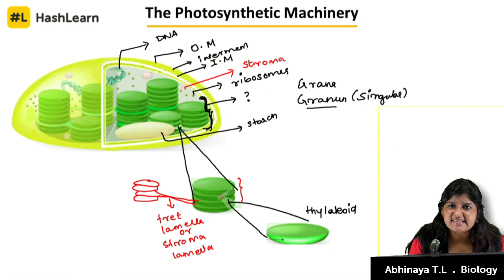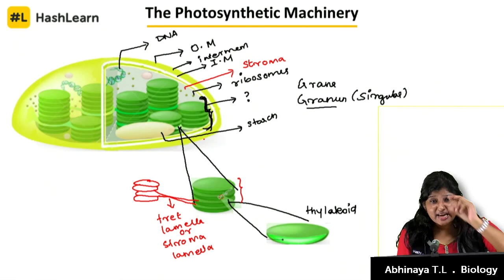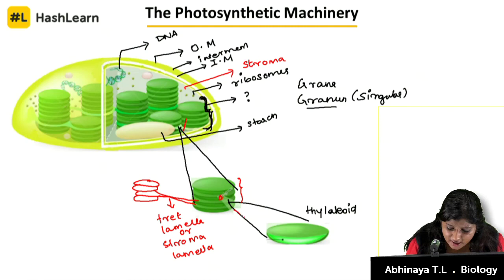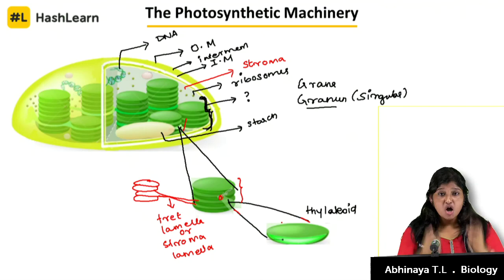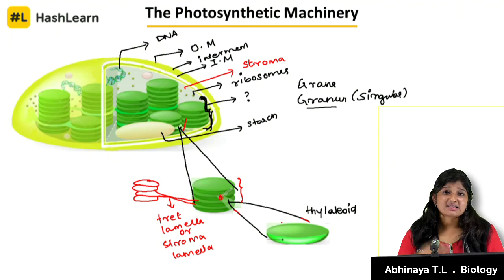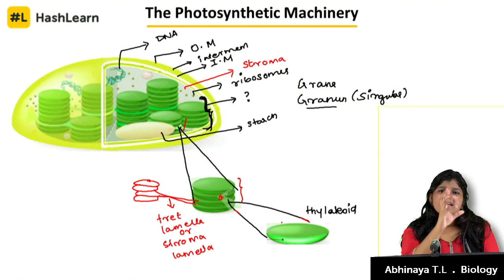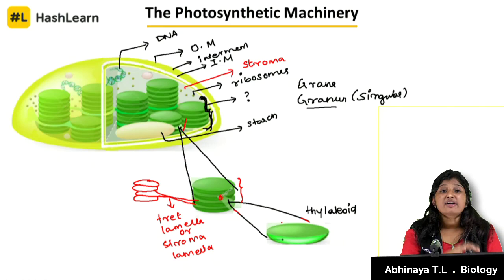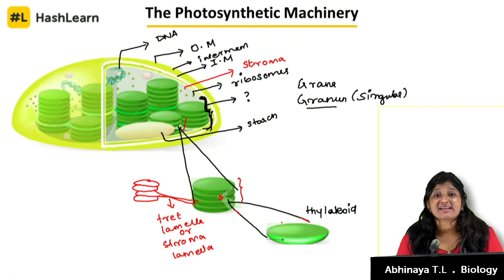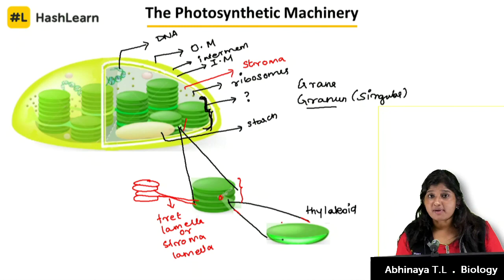The stroma is the place where dark reaction takes place. When light energy is fixed in the form of photons, it is converted into chemical energy to form ATP and NADPH. This is used in the stroma for reducing carbon dioxide to carbohydrates — that is dark reaction. How beautifully maintained is the chloroplast — such a small organelle with so many things inside it. We have to appreciate it.